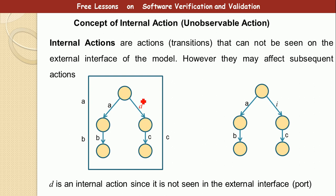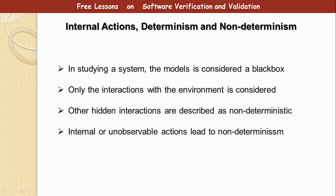Internal action actually leads to non-determinism — when the state of an automaton or a labeled transition system is not determined, that is non-determinism. We'll discuss this in a different lesson. Outside, we represent this as an internal action; because we don't see it, it is hidden. We use internal action notation — it can be anything, it can even be multiple transitions we don't know about. That is internal action.